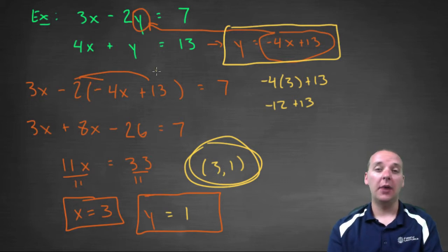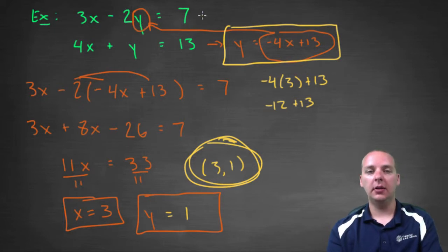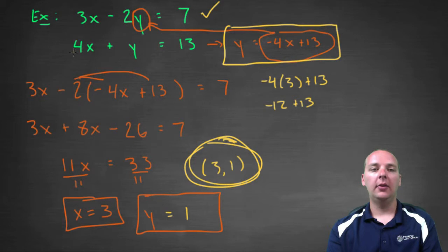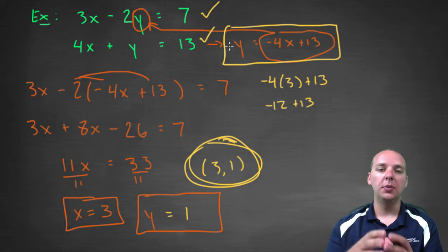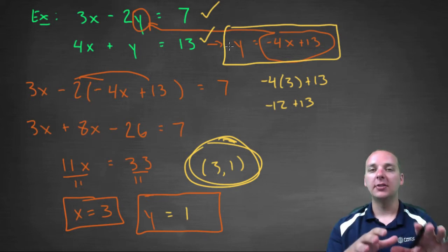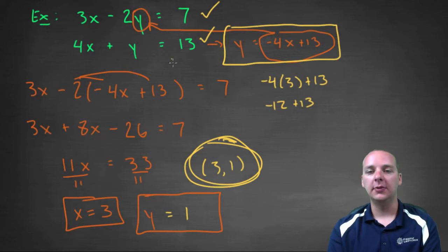You can check it, and I would encourage you to check it, especially for a test or something. It just takes two seconds, you can even do it in your head. Let's try it. 3 × 3 = 9, 9 - 2 × 1 = 7, looks good. And 4 × 3 = 12, 12 + 1 = 13. So it satisfied the system because it made both of the equations be true. So that's a very classic exercise right there, very typical.